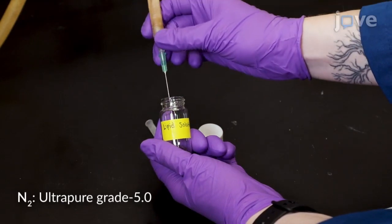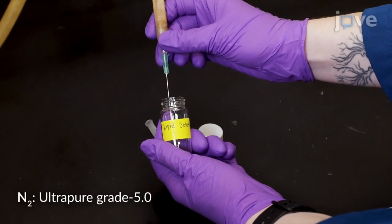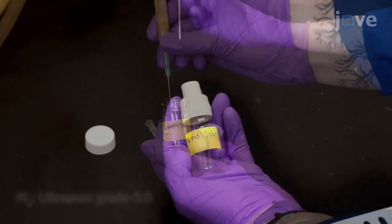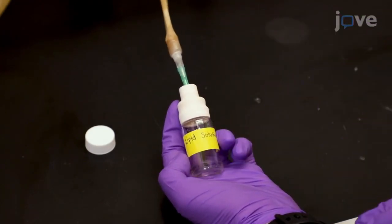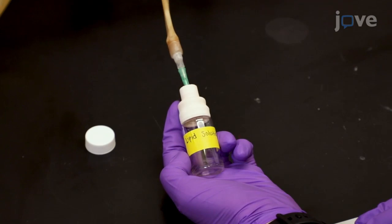Remove chloroform from lipid solution using a stream of nitrogen gas. To ensure full removal of chloroform, connect the dried lipid film to the vacuum for at least four hours.